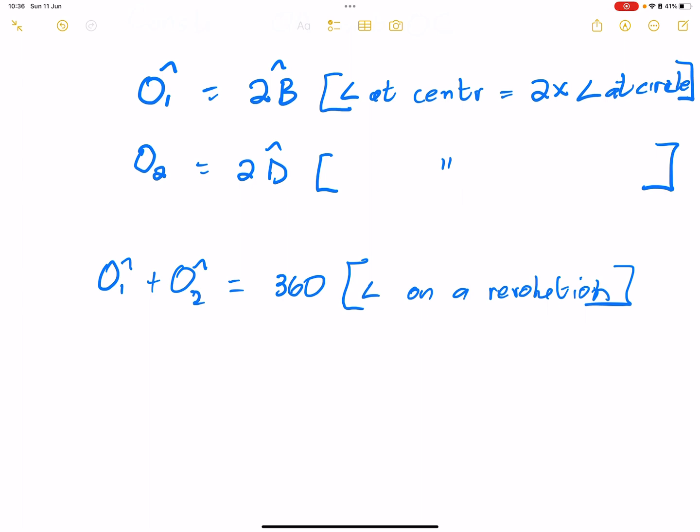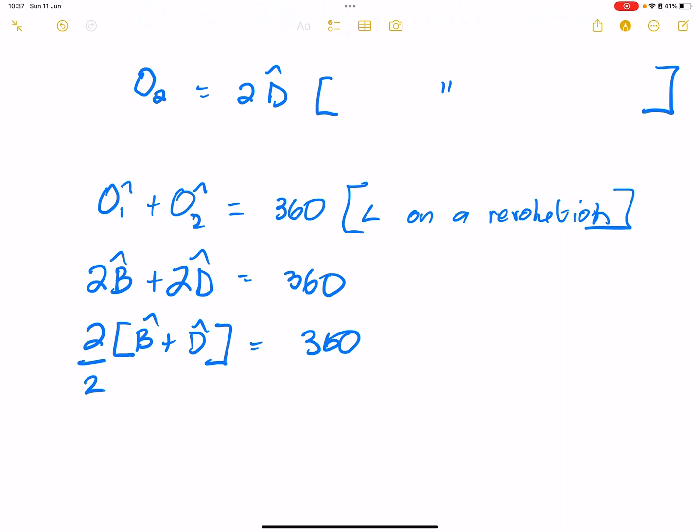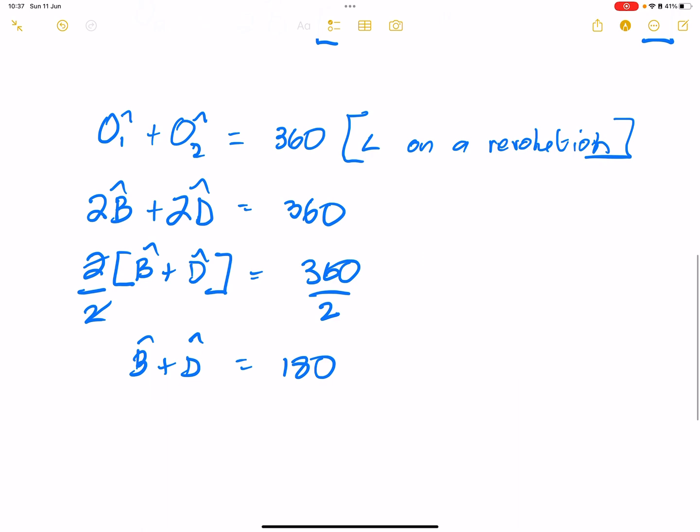So in this case, we know that O1 plus O2 gives us 360, which means that 2B plus 2D gives us 360. So which means now we can actually take out 2 as a common factor. So B plus D, this would be equal to 360. I'm sure you can see if we divide both sides by 2, then we get B plus D being equal to 180.